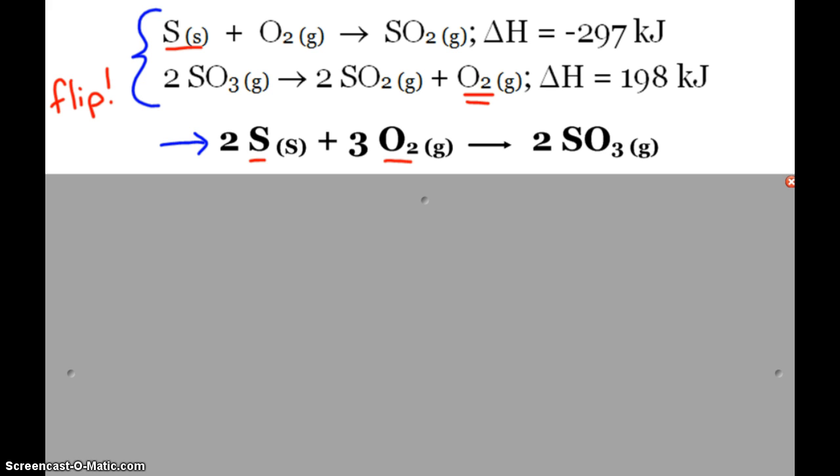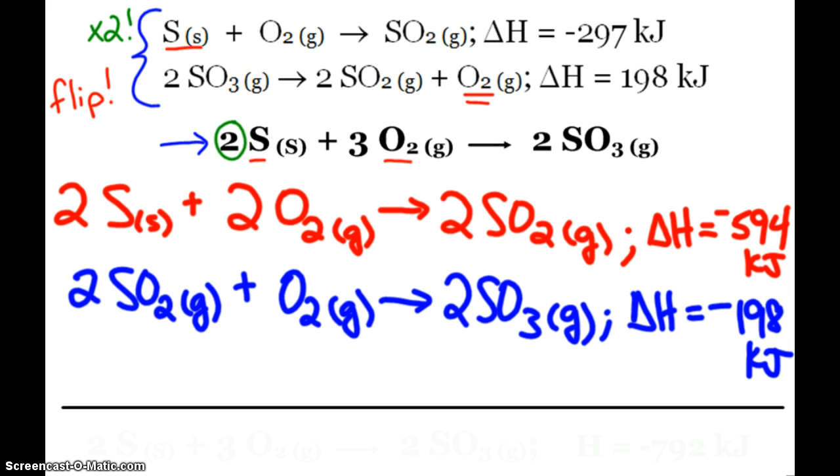So it looks like I'm going to have to flip this second reaction. The other thing I notice is that I need two sulfurs. So it looks like I'm going to have to multiply the first reaction by two. And then hopefully, all comes out well. So when I multiply the first reaction by two,